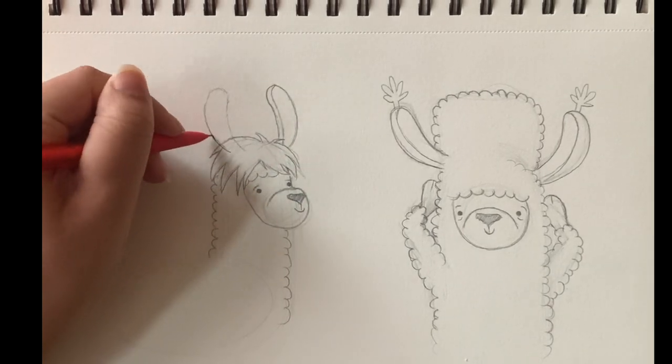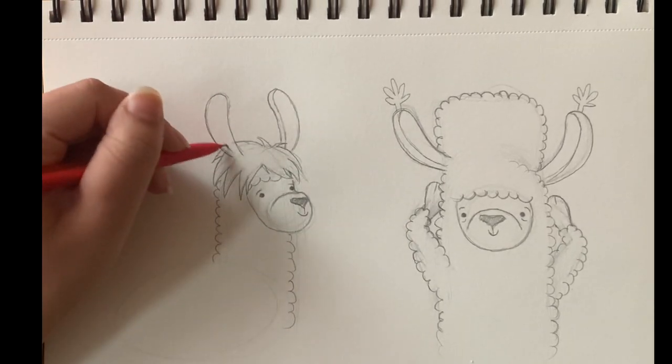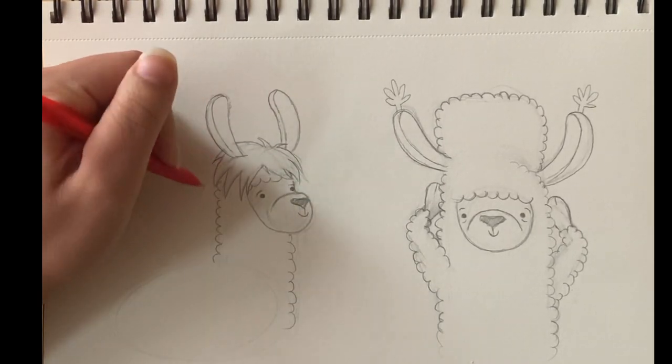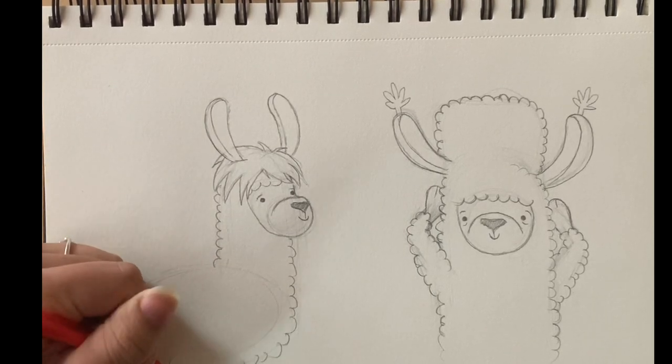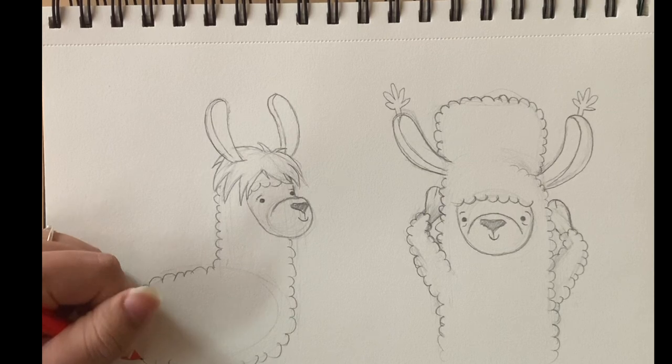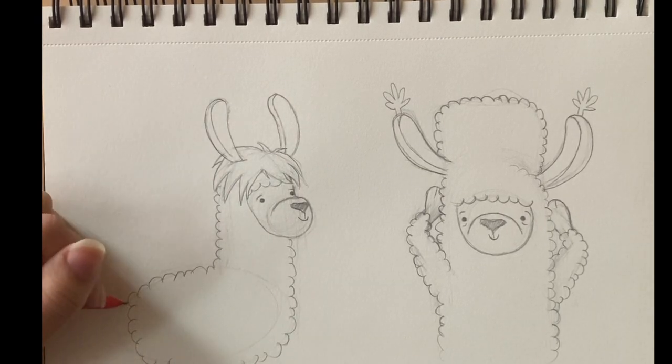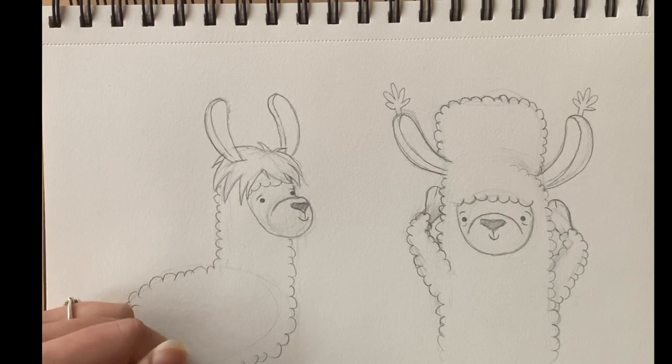Taking my kneaded eraser and just erasing any lines I don't want. Right now I'm continuing to draw the fluffy hair around his body. Can't forget his little tail since he's turned to the side.